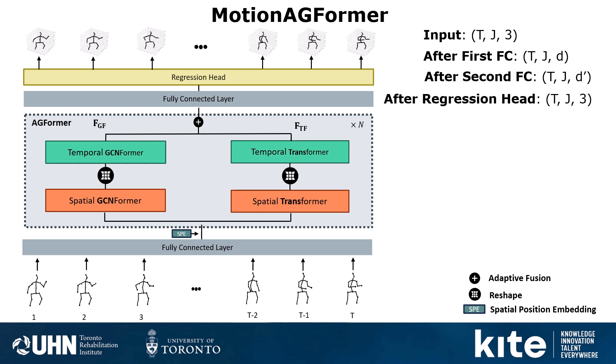Note that the Spatial Position Embedding added at first is not strictly necessary, because the GCNFormer stream can preserve both the spatial and temporal ordering of the sequence. But based on trial and error, adding this Spatial Position Embedding helps achieve better final performance.